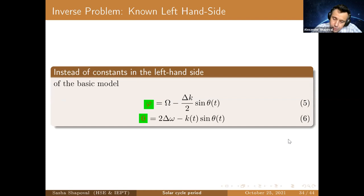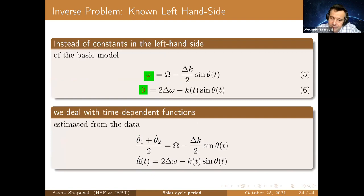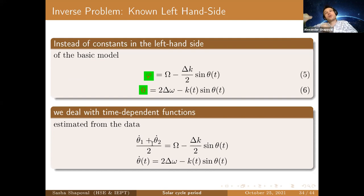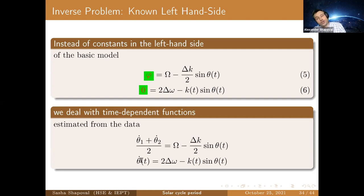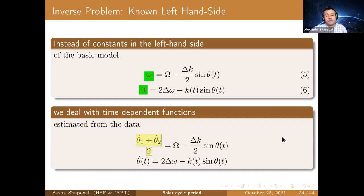Nowadays we see nothing special in the two graphs, but we saw an anomaly in the instantaneous period, and this anomaly underlies our main question. In our inverse problem we have time-dependent left-hand sides of both equations, but we are able to estimate them through the computation of the correlation of the two waves. This gives us theta of t and the derivative of theta, and our physical knowledge that the period of the solar cycle is approximately 11 years gives us the left-hand side of the first equation.